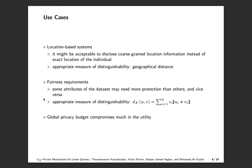Now we'll look at some use cases for the DX privacy notion. In a location-based system, it might be acceptable to disclose coarse-grained information about an individual's location instead of his exact location. In this case, the geographical distance would be an appropriate measure of distinguishability. There are other scenarios where some attributes of the dataset may need more protection than others. For instance, in a classification problem with instance space X, specific features may be more sensitive than others due to fairness requirements. In this case, it might be reasonable to choose a metric with differential privacy budget epsilon_i for different features. In both cases, the global privacy budget compromises much in the utility.